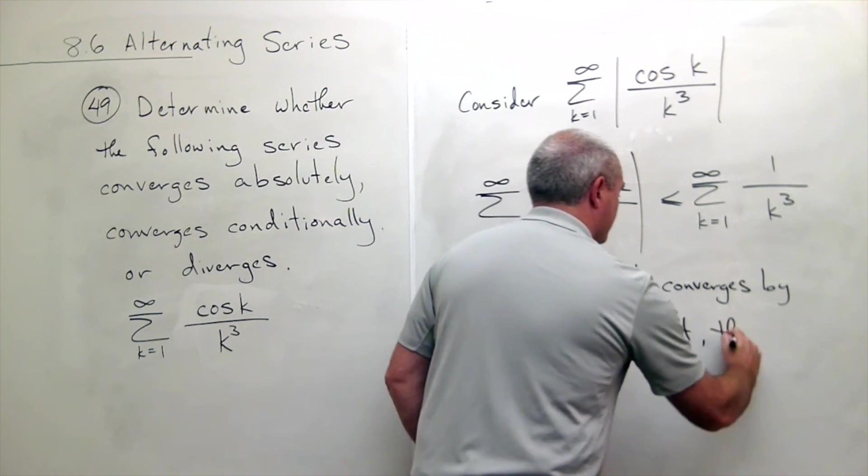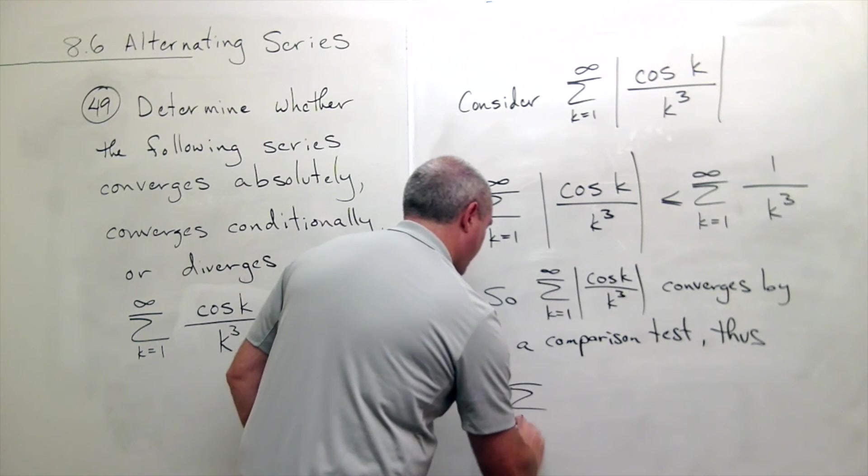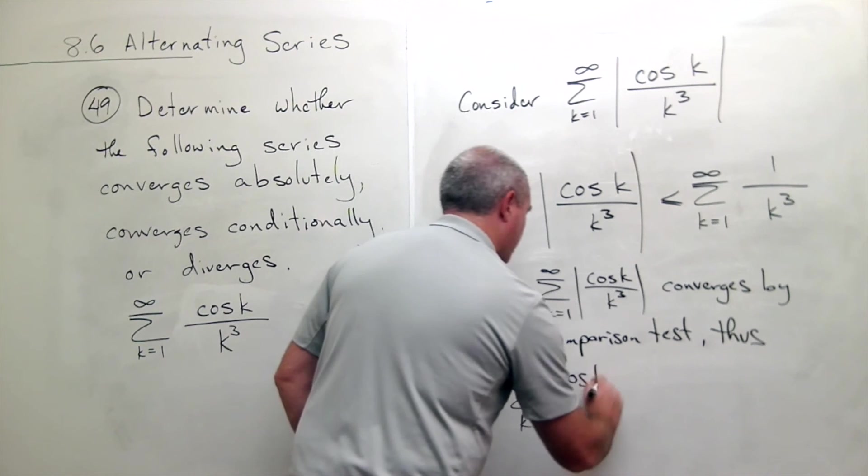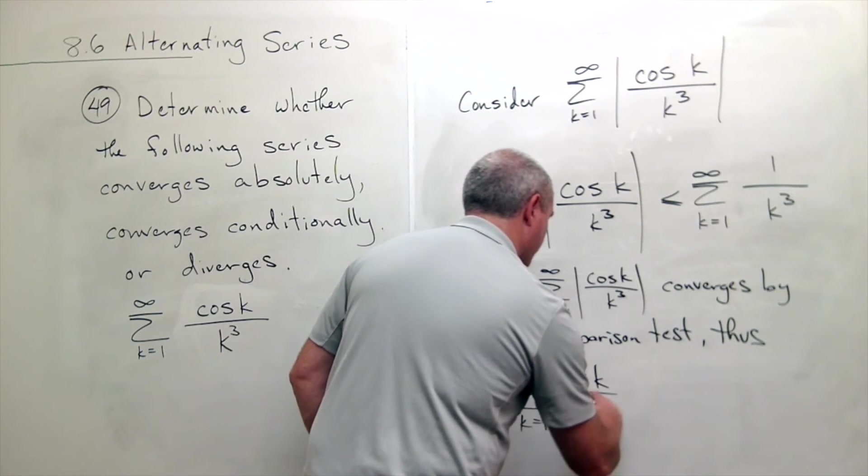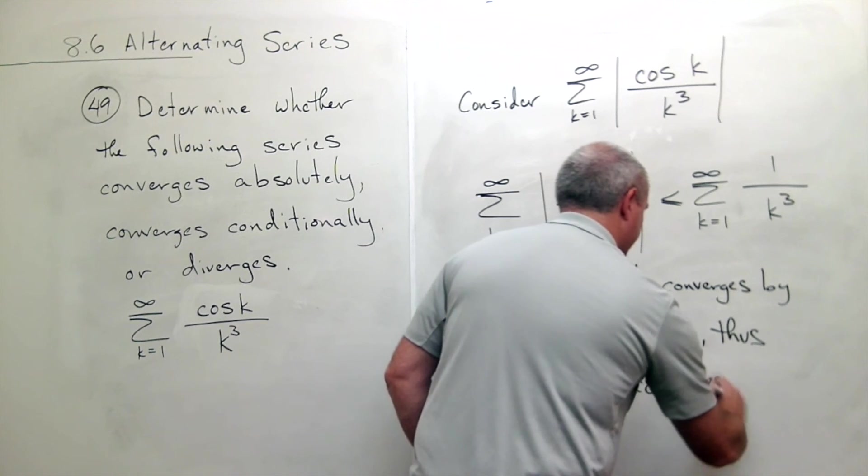Thus, the sum k going from 1 to infinity of cosine k over k cubed converges absolutely.